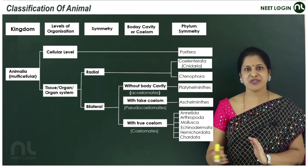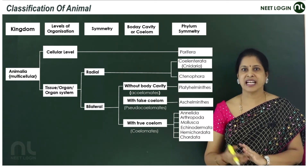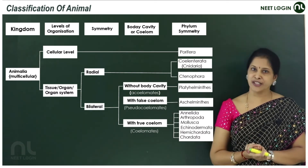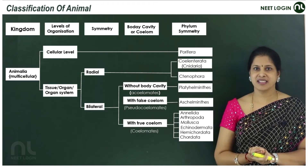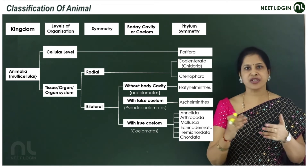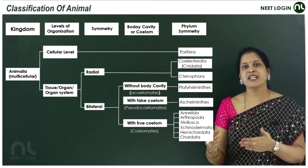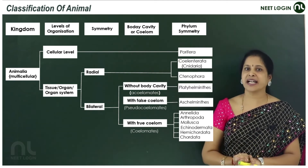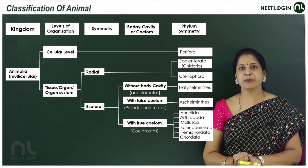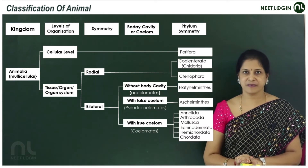Animals with a cellular level of organization are asymmetrical — no symmetry — and are acoelomates. This combination belongs to the phylum Porifera, the very primitive animals — the sponges.